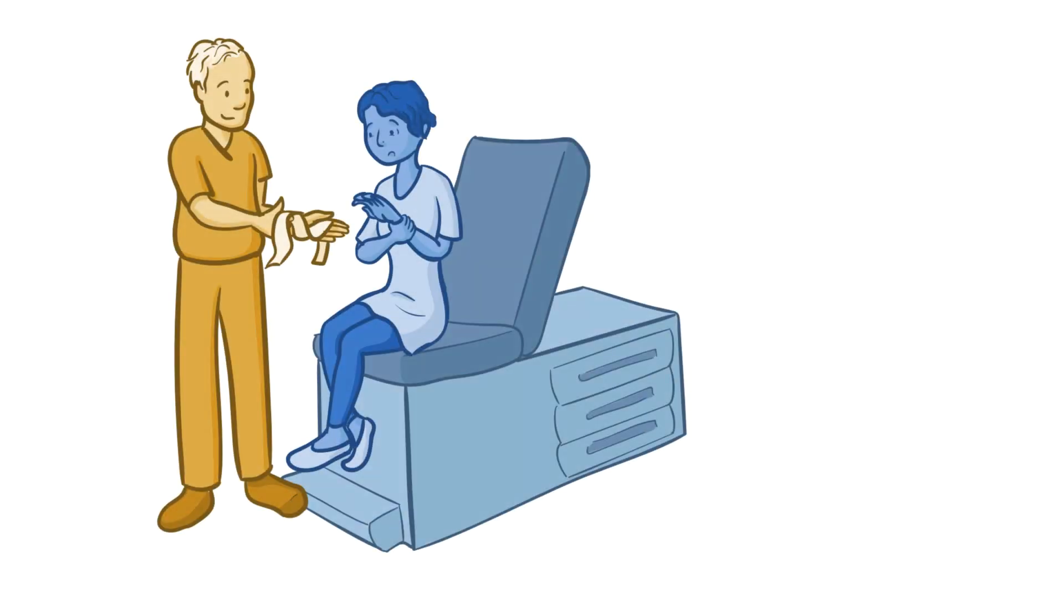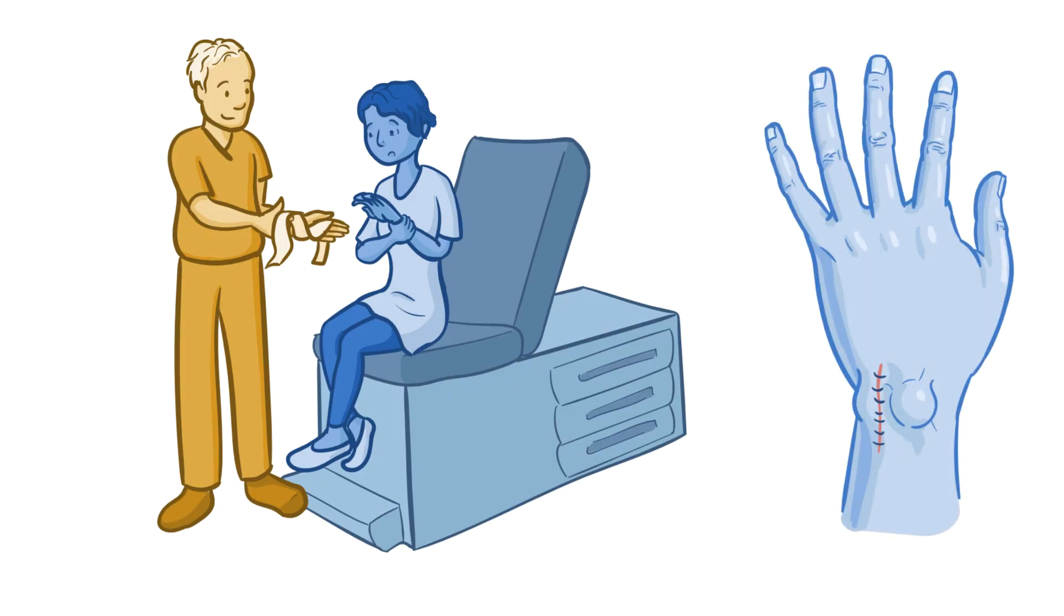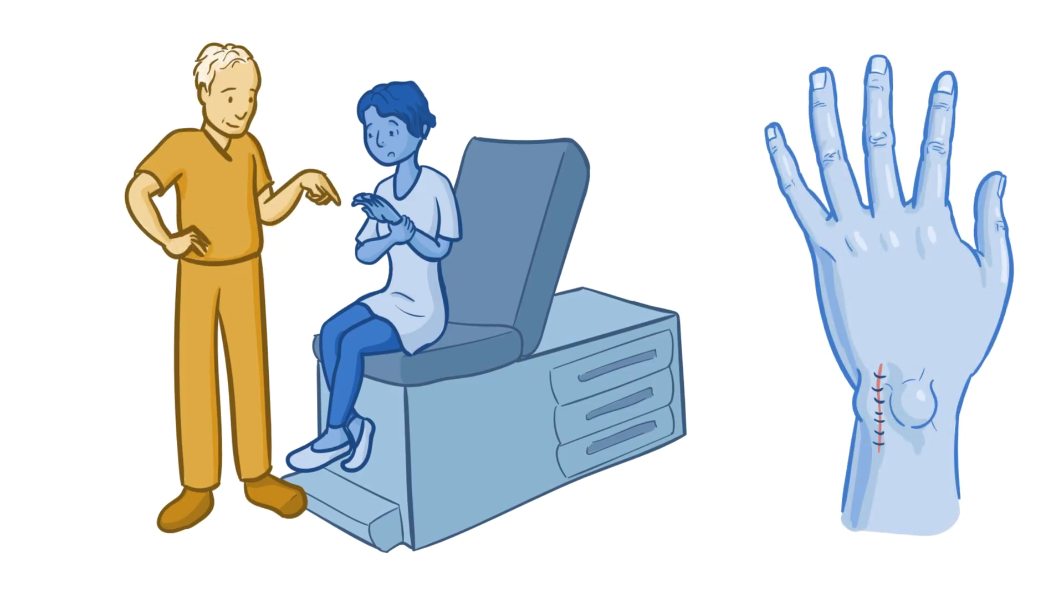At the follow-up appointment, Dr. Hammond unwrapped Sophia's bandage. Sophia looked at her wrist for the first time, and to her horror, right next to the surgical scar was her ganglion cyst. She was confused and upset, and a Spanish interpreter was called right away. With the help of the interpreter, it became clear that Dr. Hammond had done a carpal tunnel release surgery, which is a procedure she didn't need, for a problem she never had.